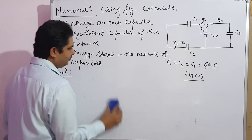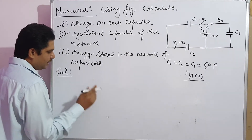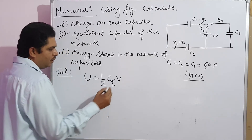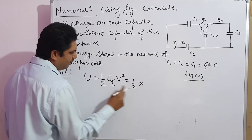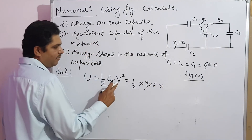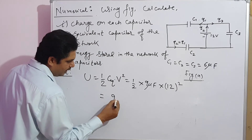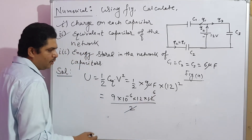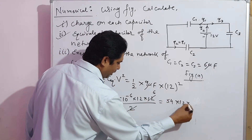Third part: energy stored in the network of the capacitor. The formula is U equals half C equivalent into V squared. C equivalent is 9 microfarad and V is 12 volt, so U equals half into 9 into 10 to the power minus 6 into 12 squared, which gives 9 into 10 to the power minus 6 into 144 divided by 2.